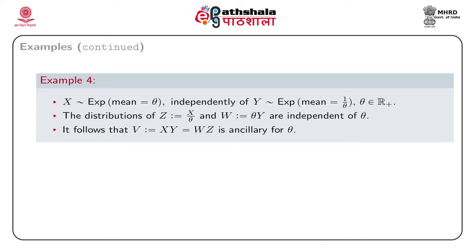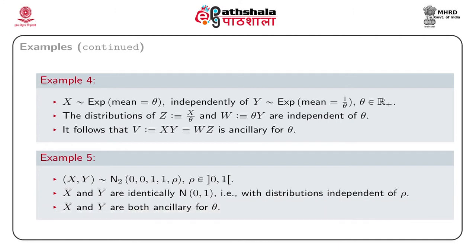Example 5: Let (x, y) be jointly distributed with a bivariate normal distribution with means (0, 0), variances (1, 1), and correlation coefficient ρ. Since x and y each individually have standard normal distributions, it follows that x is ancillary for ρ and y is also ancillary for ρ.